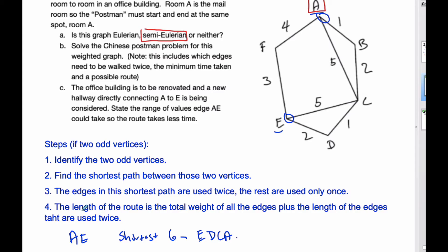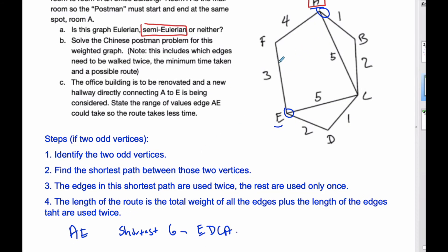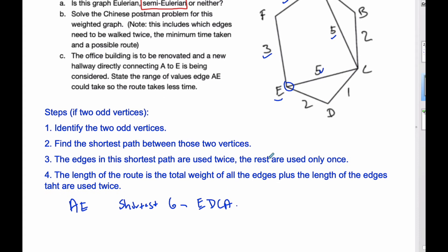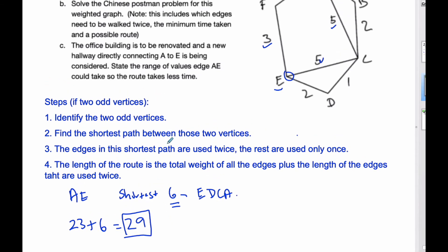And so now this path is going to be used twice. Everything else will be used once. The length of the route is the total weight of all the edges plus the extra lengths that are used twice. If I add up all these values, it's going to be 4 plus 3 is 7, plus 10 is 17, plus 3 is 20, plus 2 is 22, plus 1 is 23. So all the edges is 23 plus the extra 6 which is done twice. The length of the shortest path is 29. That is the answer to the Chinese Postman Problem.